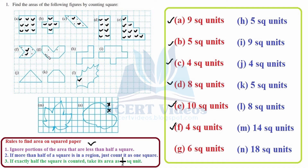For part G, we already marked one half; the other half is here — so that gives one. Counting: two, three, four, five, and six — therefore the area for part G is 6 square units.